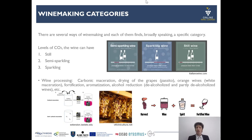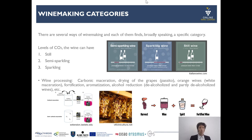There are several ways of winemaking, each finding a specific category. Looking at CO2 levels: still wines have less than 1 bar overpressure; semi-sparkling wines have a certain perceived CO2 with pressure not more than 2.5 bar; and sparkling wines are generally 3 bar and more — up to 6 bar — with CO2 derived from a second or first fermentation.